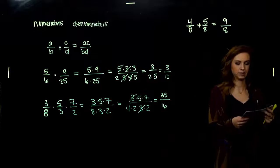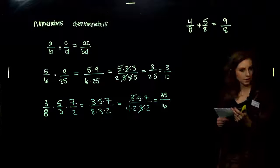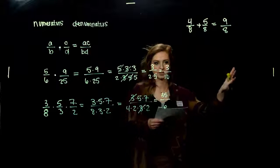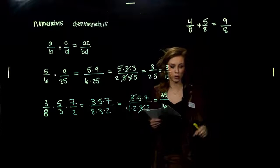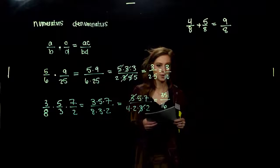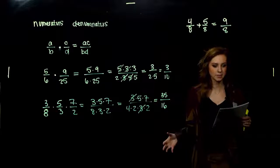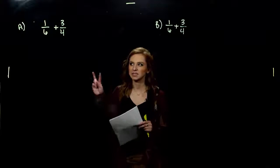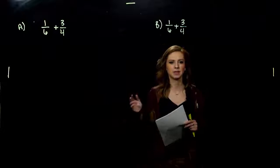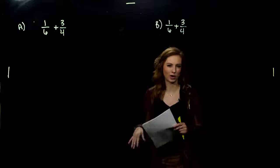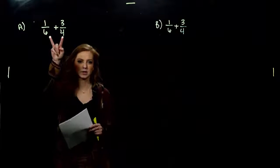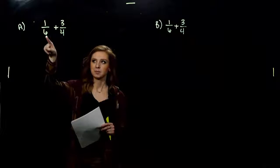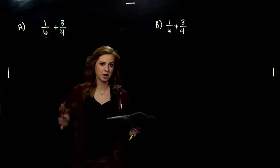But what has to happen when we have different denominators? We need to make them common. And if we can help it, we want to deal with the least common denominator — the smallest numbers I can work with — so I don't have to do as much simplifying at the end. There are two different options. The first method is getting a common denominator — not necessarily the least common — but this method always works. We can multiply 6 by 4 and 4 by 6 to get a common denominator between the two.